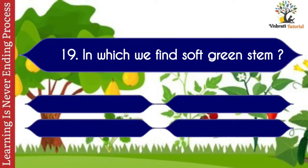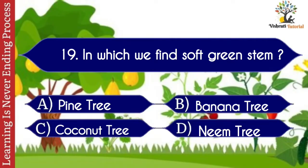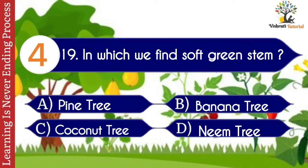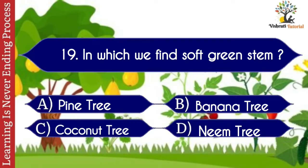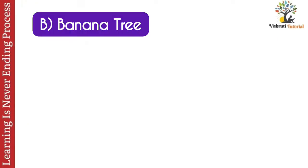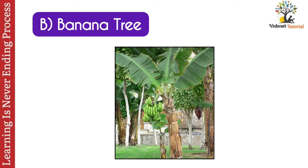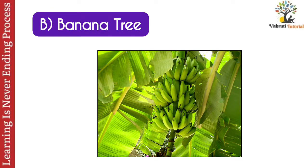Question number nineteen: in which plant do we find a soft green stem? Options: A. Pine tree, B. Banana tree, C. Coconut tree, D. Neem tree. The correct answer is B. Banana tree. In a banana tree we find a soft green stem.